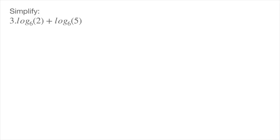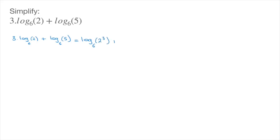I'll start by copying this expression: 3 times log base 6 of 2, which is being added to log base 6 of 5. To simplify this expression, the first thing we'll take care of is this 3, which is multiplying the first logarithm. To do that, we're going to use the power rule for logarithms, and that leads to: log base 6 of 2 to the power of 3, plus log base 6 of 5.